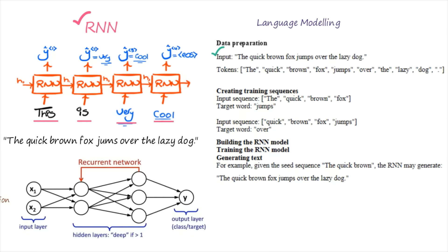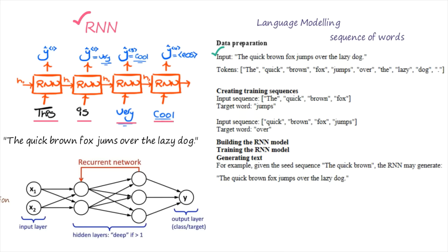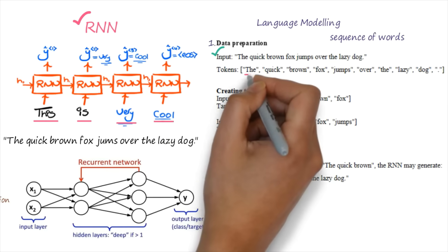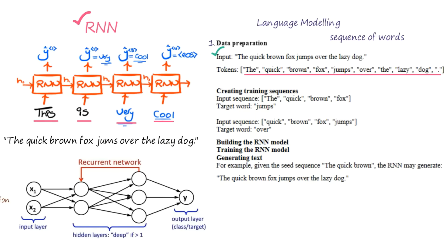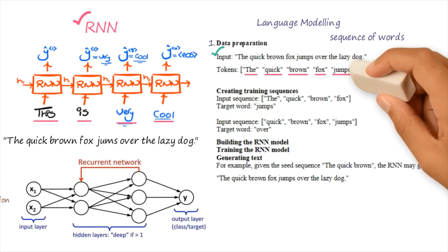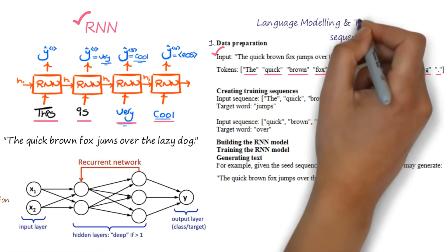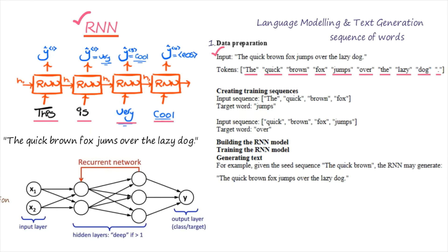Here the input is one text, but what we need is a sequence of words. So how to create a sequence of words? This is step number one: whenever a particular input text is given to you, you have to divide the entire text into tokens. Token means these are the words that you are segregating from this text. So if you want to use language modeling and text generation using RNN, take a text and divide each word into tokens.